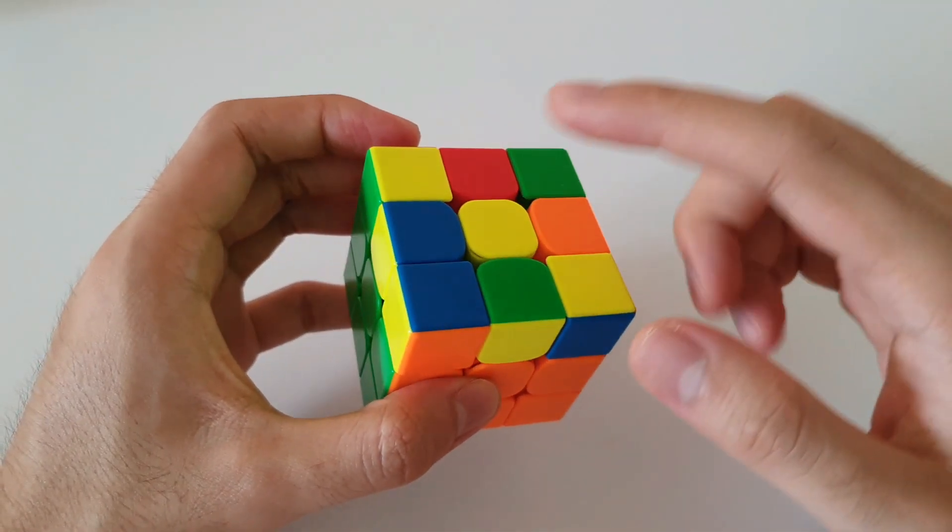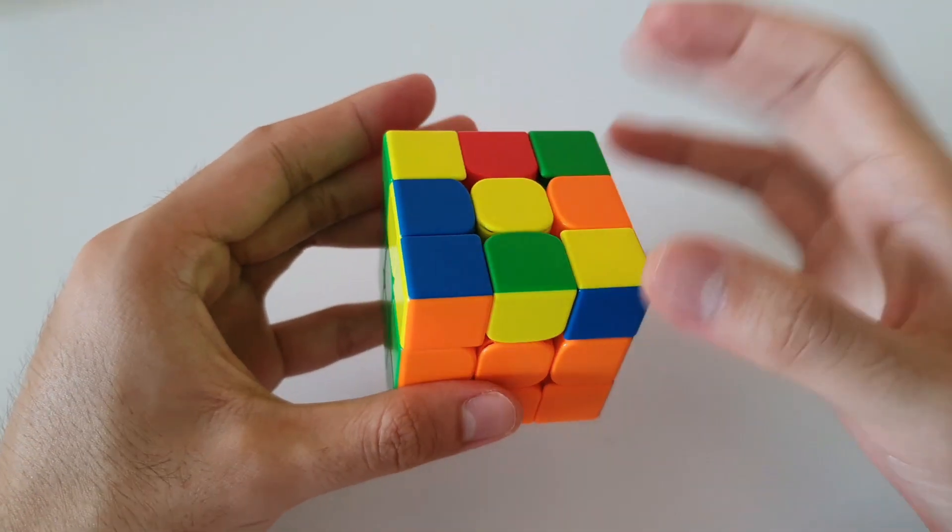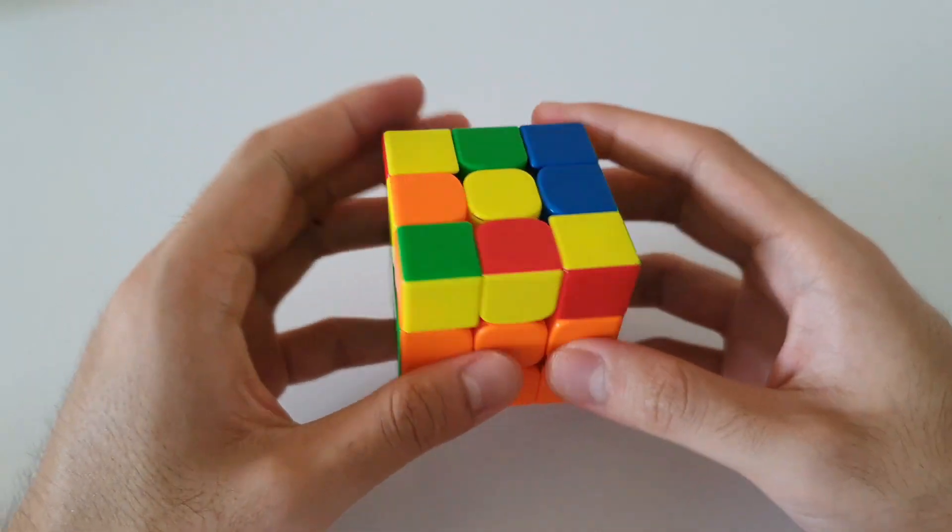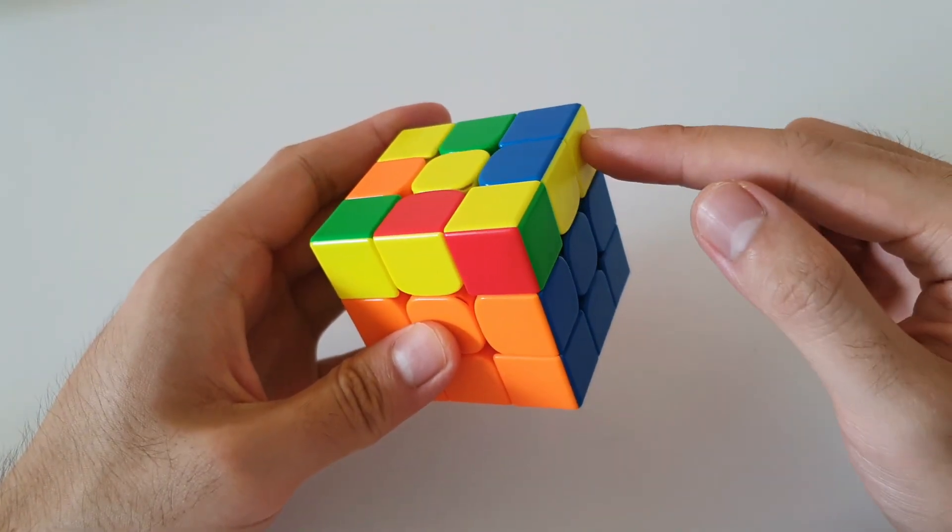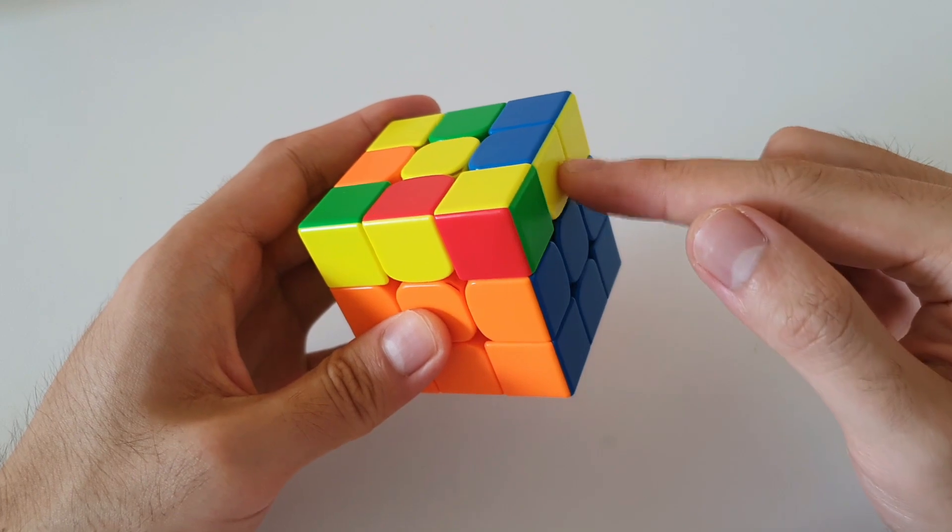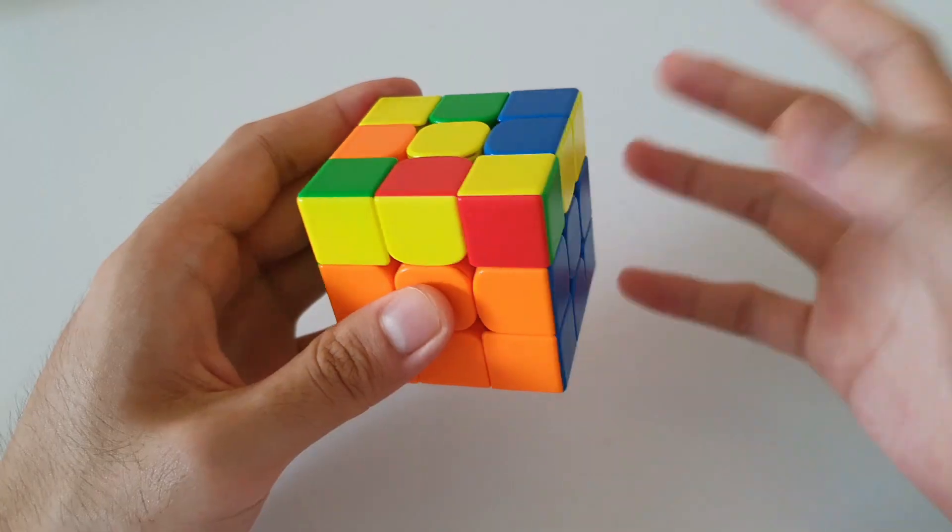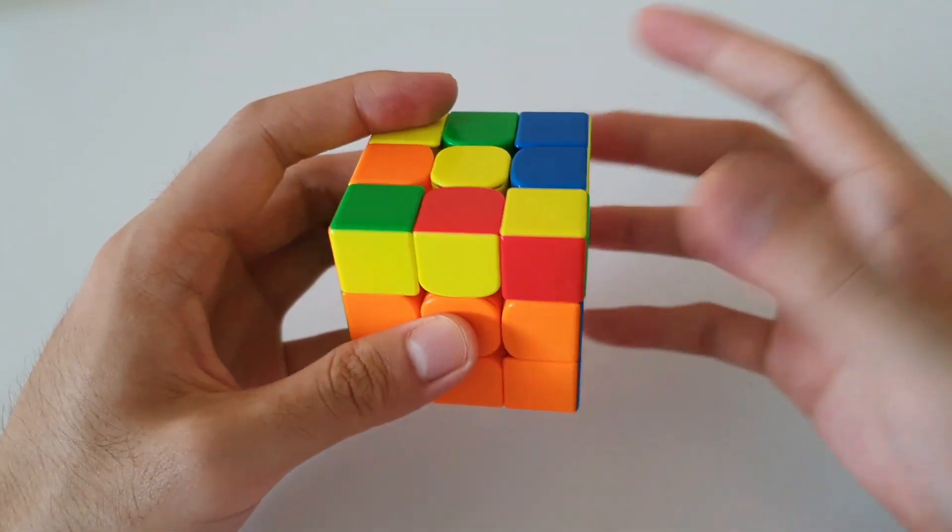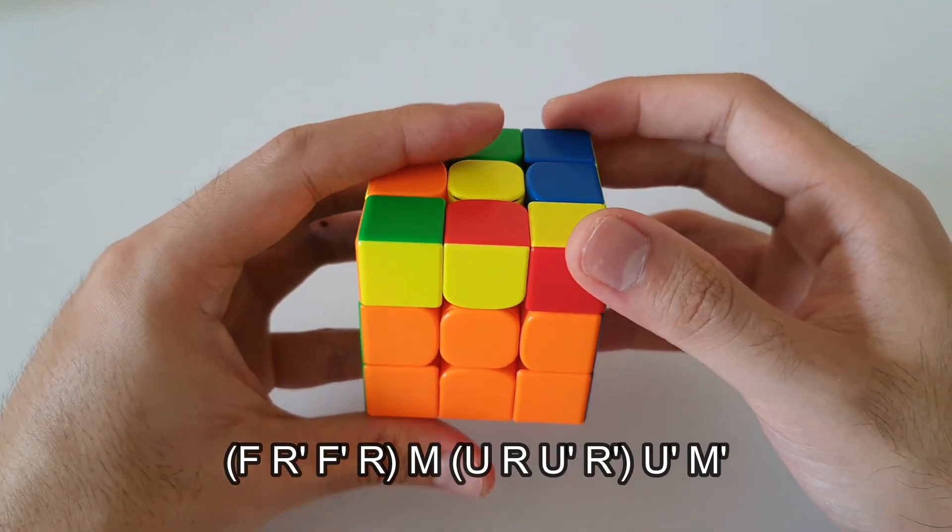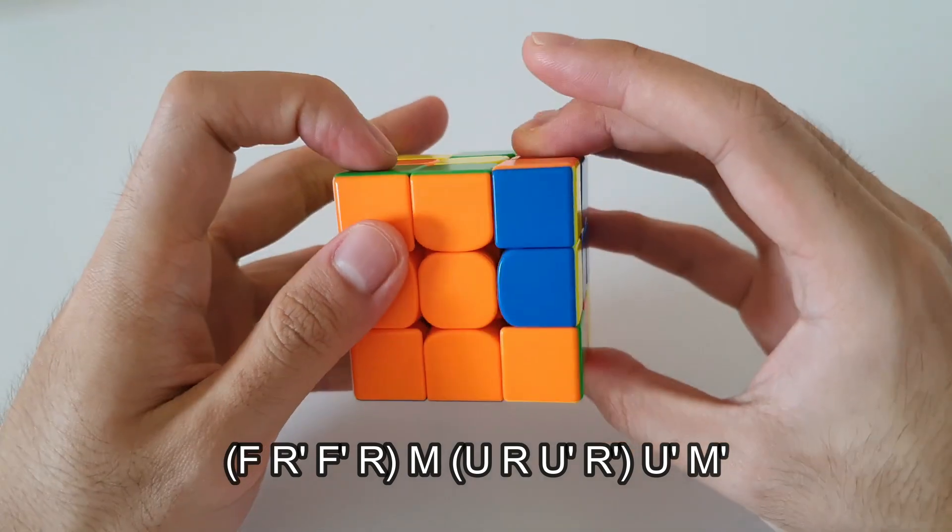An alternative algorithm for this case is actually to hold it the other way around. So in this case, we have one of the 2x1 bars on the right side and the other 2x1 bar facing the front. From this angle, a different algorithm we can use goes like this. So it starts off with a reverse sledge from the front.